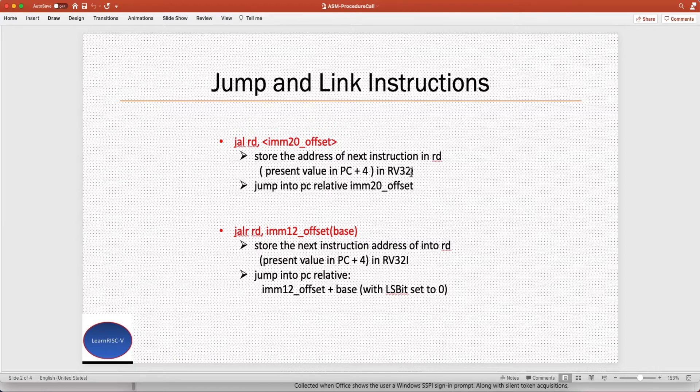Hence the next address following this current instruction would be the current program counter value plus four. That would be stored in the destination register and the execution would jump into a PC relative address of this offset. From the current program counter value, the execution can jump into a plus or minus one megabyte address space.